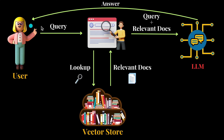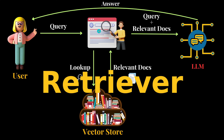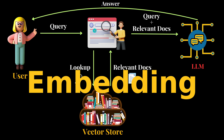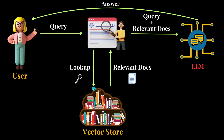Before I show you the code, let me explain the workflow of our app. In the case of a normal LLM app, a user query is directly sent to the LLM, which then generates a response that is sent back to the user. But in the case of a RAG application, the user query is first sent to an intermediary named the retriever. The retriever then generates an embedding of the user query and sends that embedding to a vector store to look up matching embeddings.